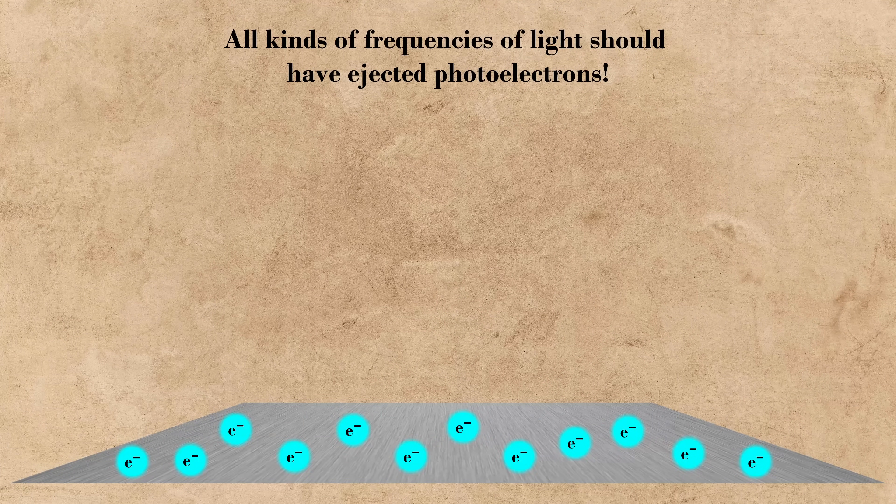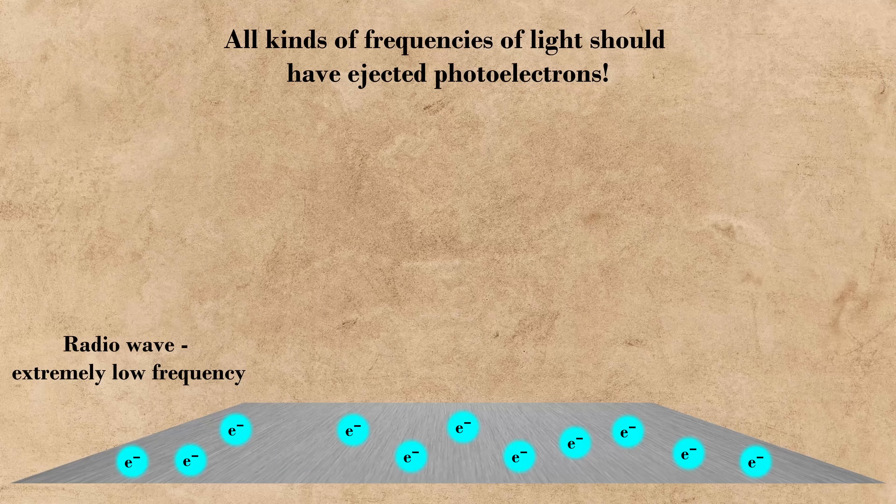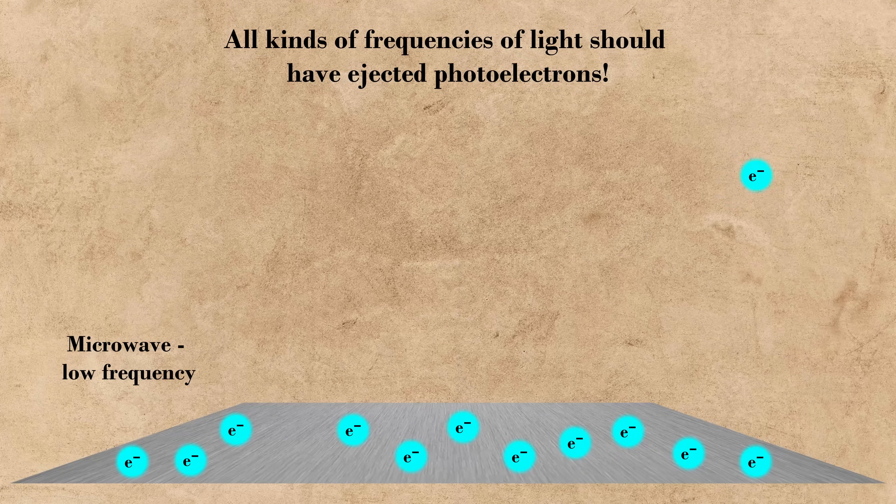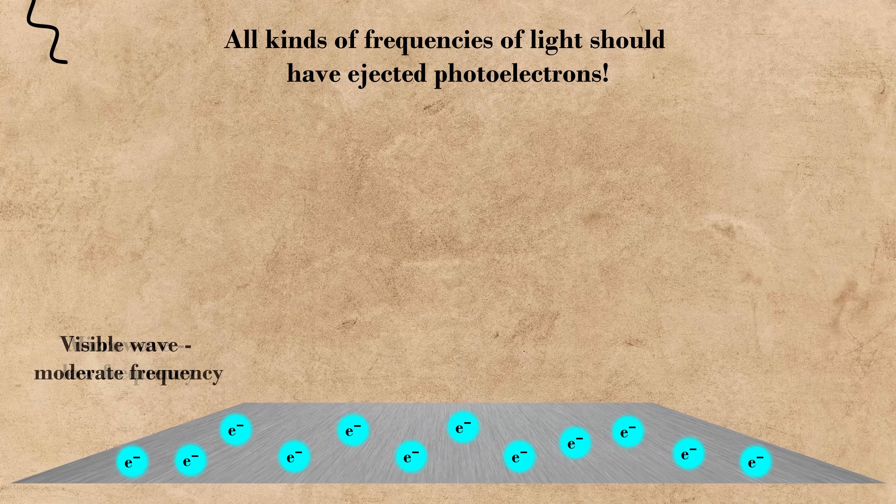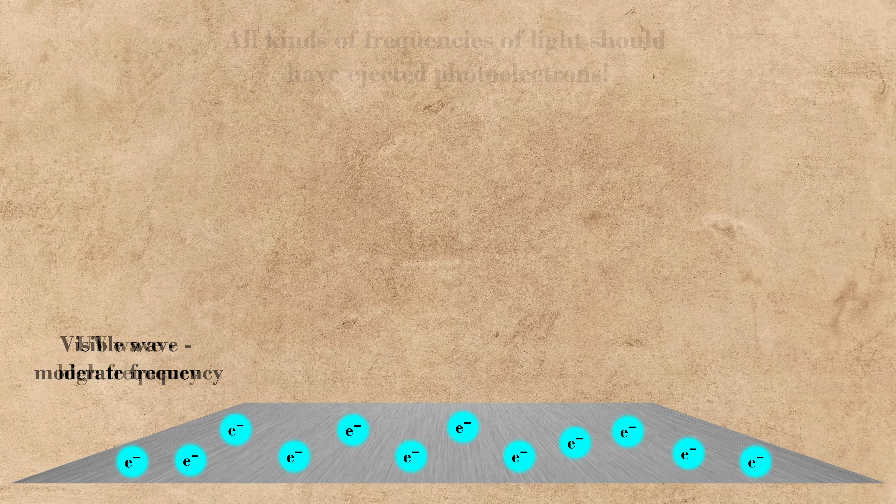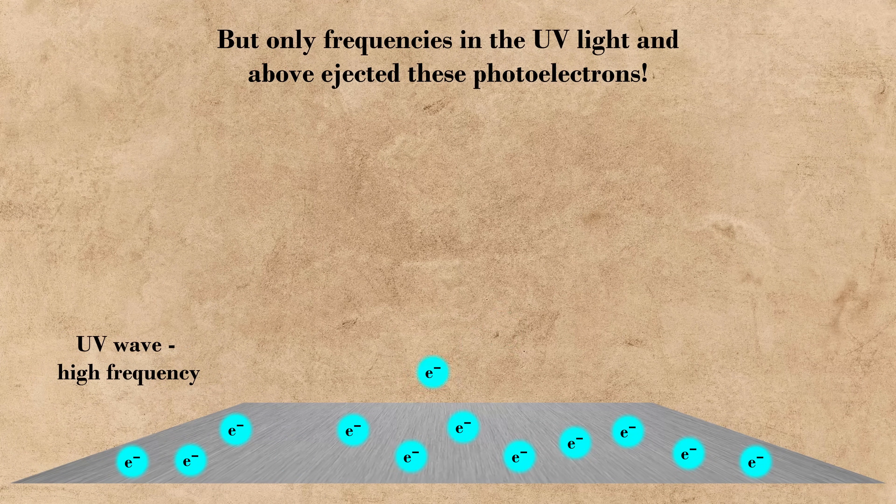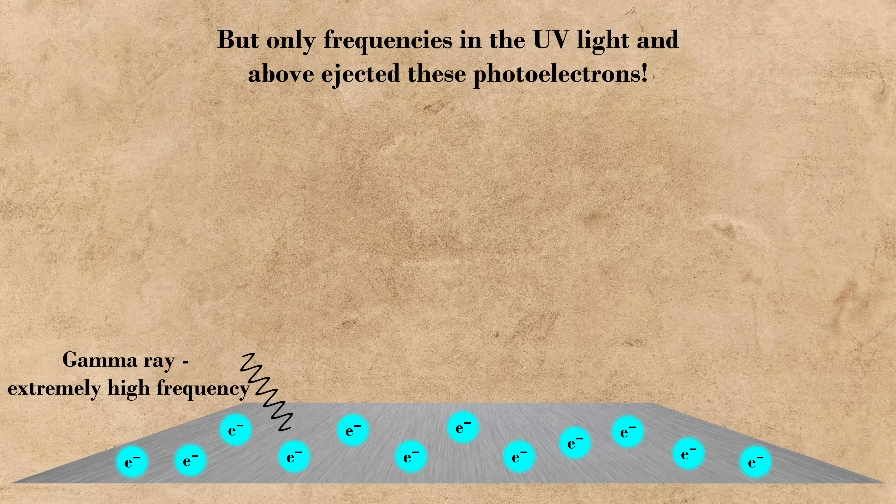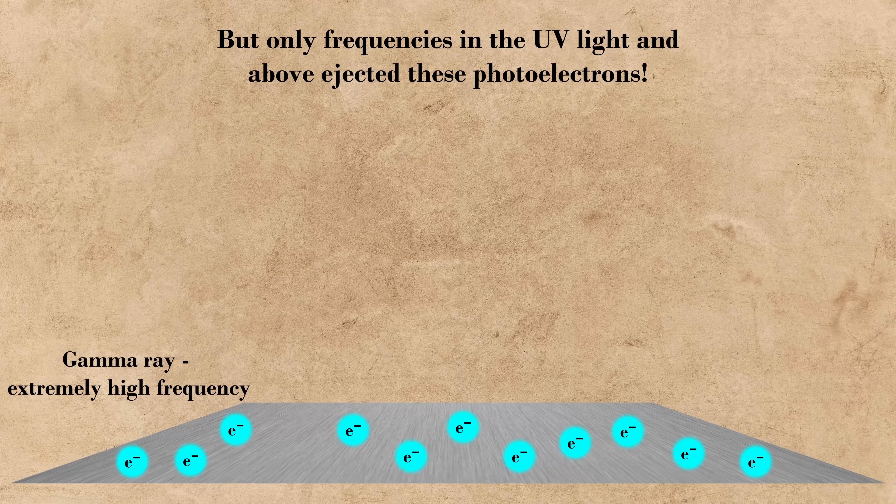The second was that, according to classical wave theory, any frequency of light should be capable of ejecting photoelectrons. Hertz and Lenard showed, however, that there was a certain frequency of light that caused these ejections, and that it existed in the ultraviolet, and anything below the ultraviolet would not cause this effect, and thus we have our second contradiction.